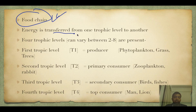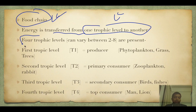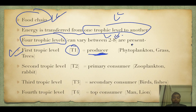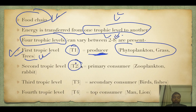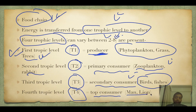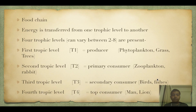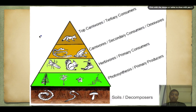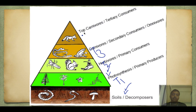Energy is transferred from one trophic level to another across usually four trophic levels, though it can range from two up to eight in extreme situations. T1 are producers like phytoplankton, grass, and trees. T2 are primary consumers like zooplankton and rabbits. T3 are secondary consumers like birds and fish. T4 are top consumers like humans and lions. This is depicted in an ecological pyramid, with decomposers shown at the base.